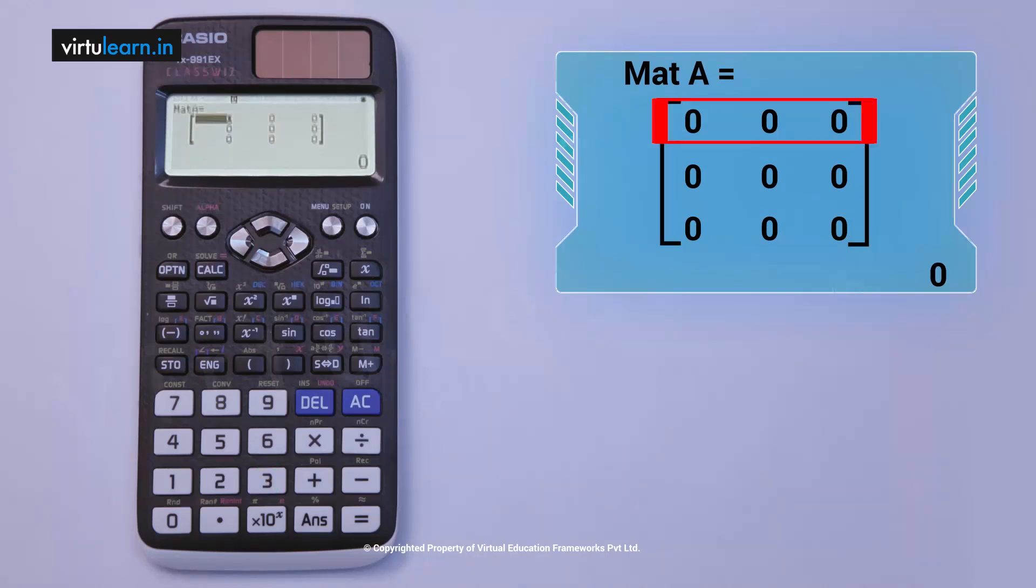First element means first row, first column element. When you press the equals symbol, it takes one. The first row, first column element is one. Press minus two, and when you press the equals symbol, it takes minus two. Again, three, press the equals key.